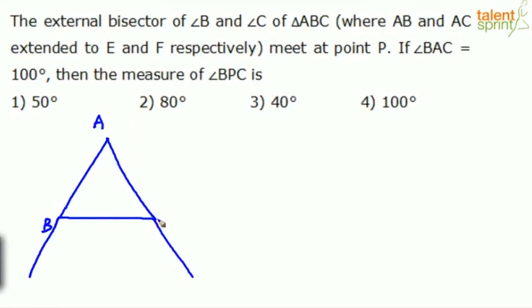So AB and AC are extended. So this is the angle B, external angle B and this is the external angle C. Now they are bisectors. So let's say external angle B bisector is this and external angle C bisector is this. They meet at a point P. They meet at point P. This is point P. He is asking us to find out.